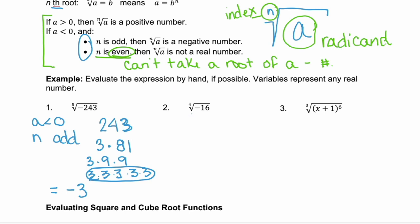Now, example 2, we're taking the fourth root of negative 16. So again, a, our radicand is negative. But here, n is an even number. Our index is 4. So we know right off the bat that our answer is not a real number. And we're done.